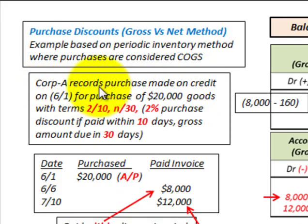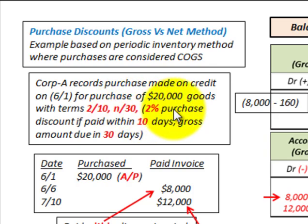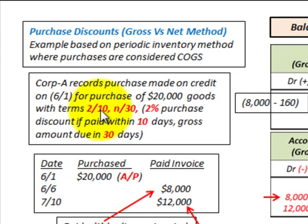Corporation A records a purchase made on credit on 6-1 for $20,000 worth of goods with terms 2-10 net 30. This means you get a 2% purchase discount if paid within 10 days, and the gross amount is due within 30 days. So if you pay within the first 10 days you get a 2% discount on that amount.